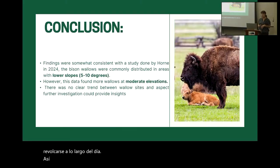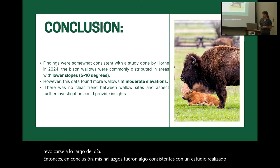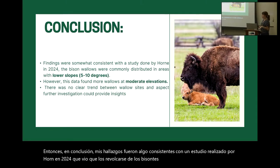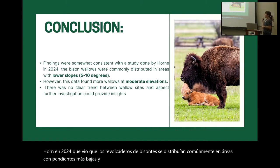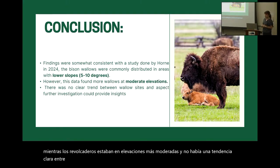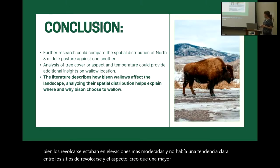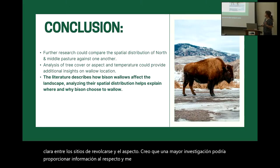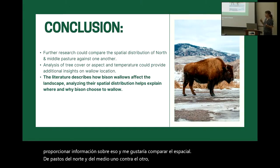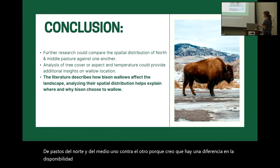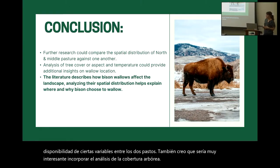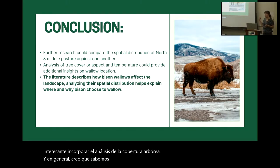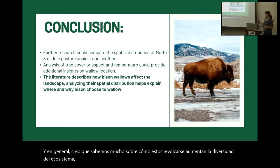In conclusion, my findings were somewhat consistent with a study done by Horn in 2024 that saw that bison wallows were commonly distributed in areas with lower slopes and higher elevations. However, my data found that wallows were at more moderate elevations and there was no clear trend between wallow sites and aspect. I would like to compare the spatial distribution of north and middle pasture against one another, as I think there is a difference in availability of certain variables across the two pastures. I also think it would be interesting to incorporate analysis of tree cover. Overall, we know a lot about how wallows increase ecosystem diversity, but understanding more about where they are in the landscape could explain why and where bison choose to wallow.